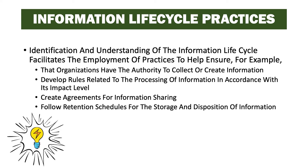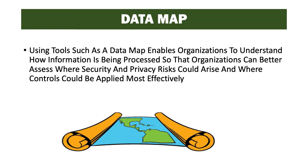Defining the stages and the life cycle of information types processed by the system is important. For example, if the information has PII traits — if the information is PII — then we'd want to make sure that we are authorized by the system owner and the authorizing official to process PII. It's important to define these things up front. Using tools such as a data map enables organizations to understand how information is being processed so that they can better assess where security and privacy risks could arise and where controls could be applied more effectively.